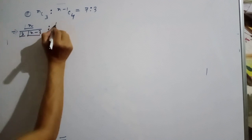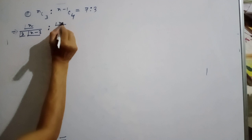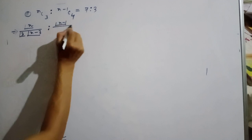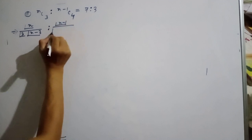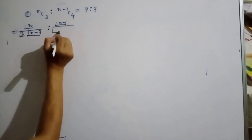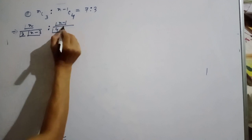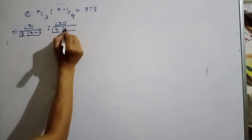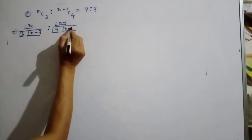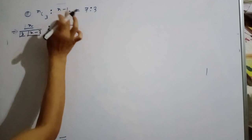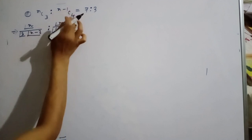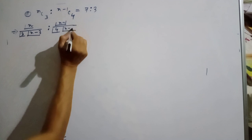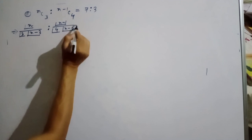Setting up the ratio using factorial formulas: n factorial over 3 factorial (n minus 3) factorial, divided by (n-1) factorial over 4 factorial (n minus 5) factorial, equals 7 by 3.